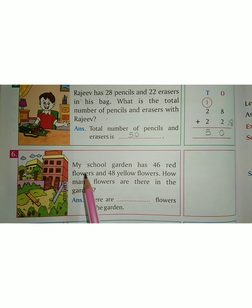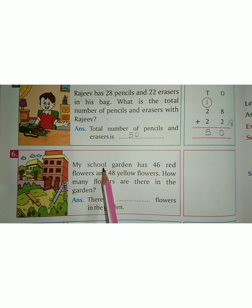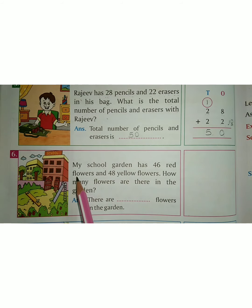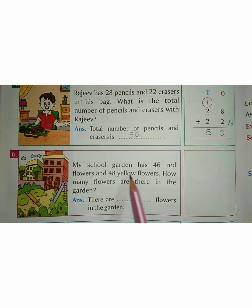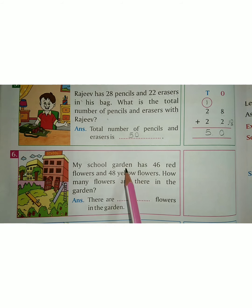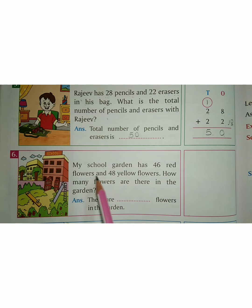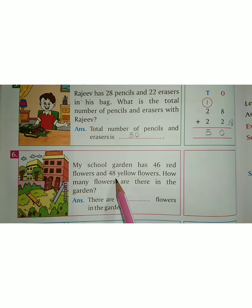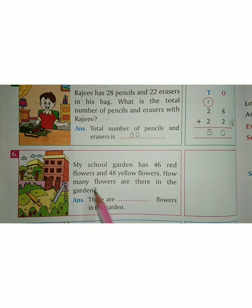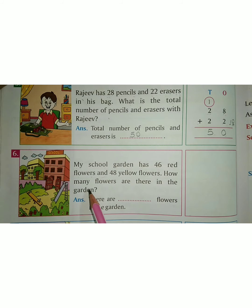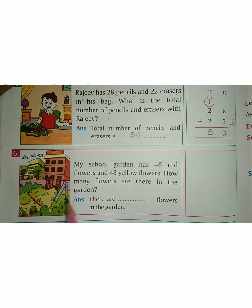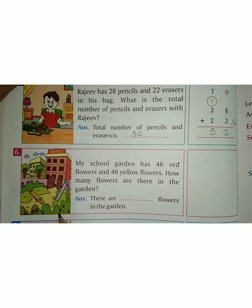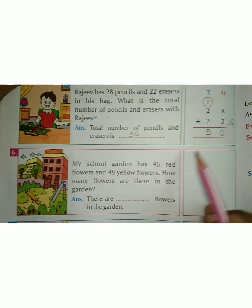Next question: My school garden has 46 red flowers and 48 yellow flowers. Mere school garden mein 46 red flowers hai and 48 yellow flowers hai. How many flowers are there in the garden? Total garden mein kitne flowers hai?